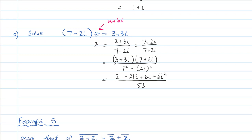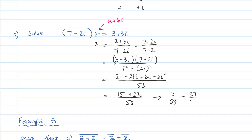That gives me 21 and then 6i squared is minus 6, so 15 plus 27i over 53, which is the correct answer. We might consider simplifying it to 15 over 53 plus 27 over 53 i. That's now in the form a plus bi, which is a better form to put it in — and sometimes a question will ask you to put it in that form, so just be wary of that.